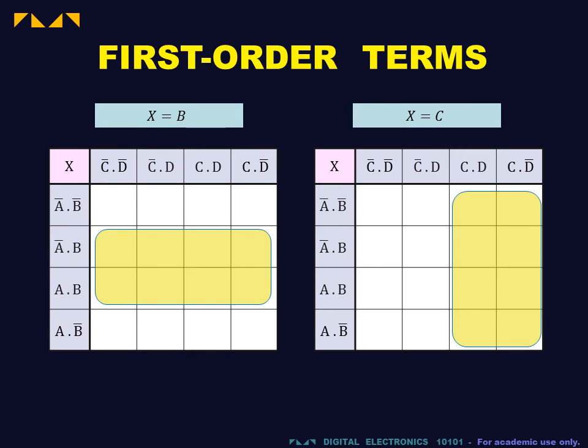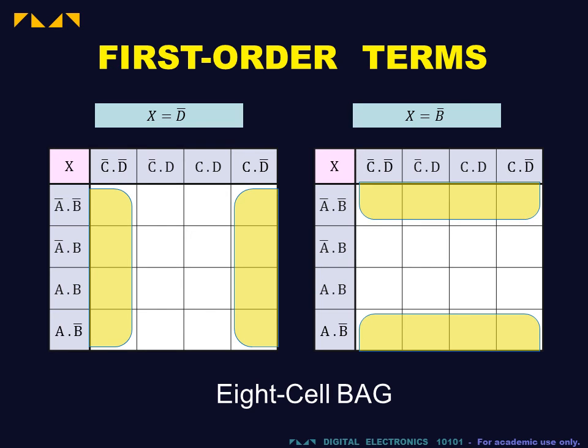First order terms form bags containing eight cells, which again may wrap around.